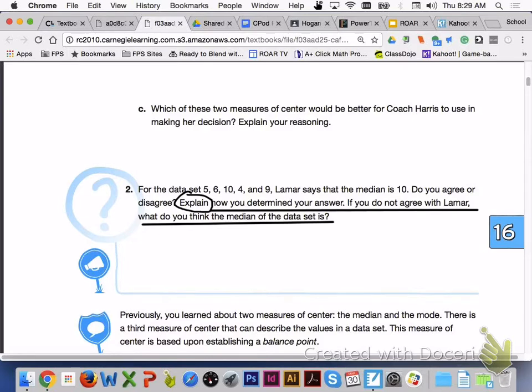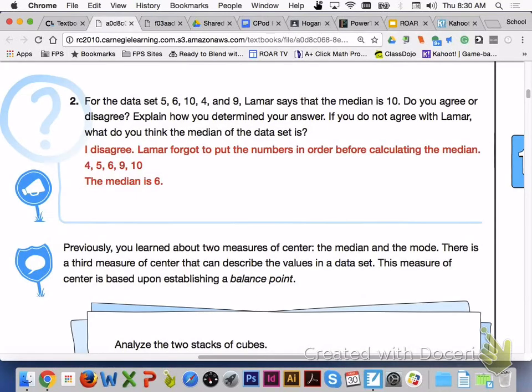Please answer number two with your group members. For number two, we are going to disagree with Lamar. Lamar forgot to put the numbers in numerical order before calculating the median. When you put the numbers in numerical order, the median is 6.